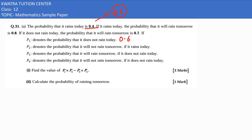Then in the next line they are saying: if it rains today, the probability that it will rain tomorrow is 0.8. So next day ke chances kitna? 0.8. But what is p2? They are saying p2 denotes the probability that it will not rain tomorrow if it rains today — so 1 minus 0.8 gives you 0.2.